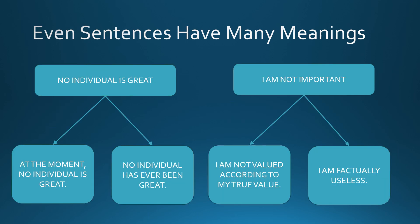Therefore, when someone says 'no individual is great,' it could mean that at the moment no individual is great, or it could mean no individual has ever been great. Similarly, when someone says 'I am not important,' it could mean 'I am not valued according to my true value,' or it could mean 'I am factually useless.' Just as 'nobody' was expanded into 'no individual' and 'no importance,' similarly 'individual' and 'importance' can be expanded into sentences which in turn use many words, each of which has many meanings — leading again to new contradictions.